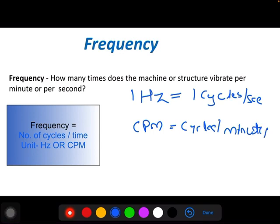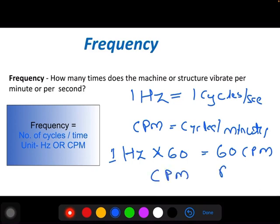We can also have a unit of frequency in CPM, that is cycles per minute. We can correlate Hertz with CPM by multiplying 60. That is, one Hertz times 60 is 60 CPM. In case of vibration, both CPM and RPM (revolutions per minute) are interchangeable.